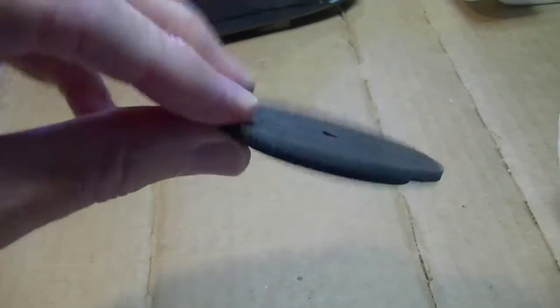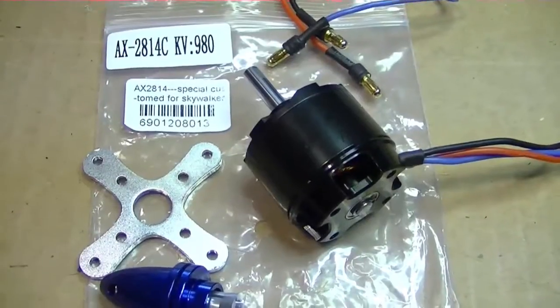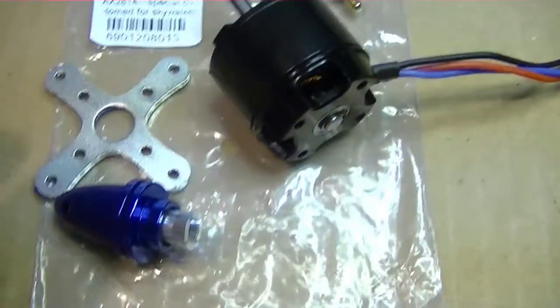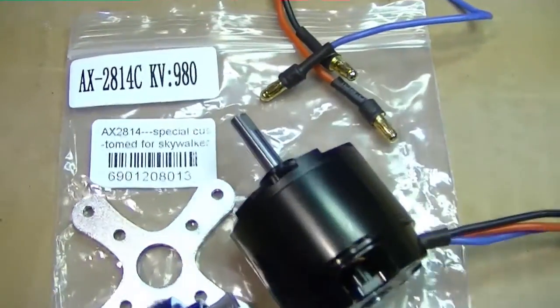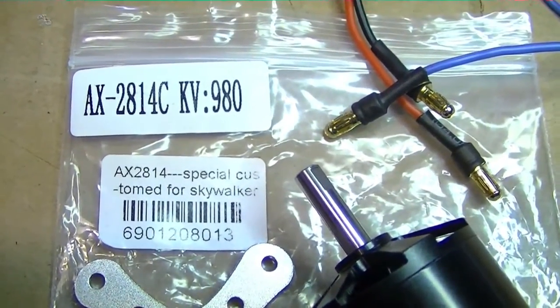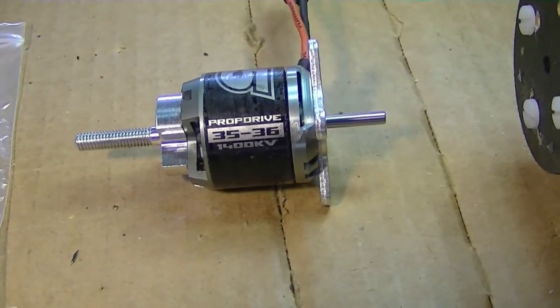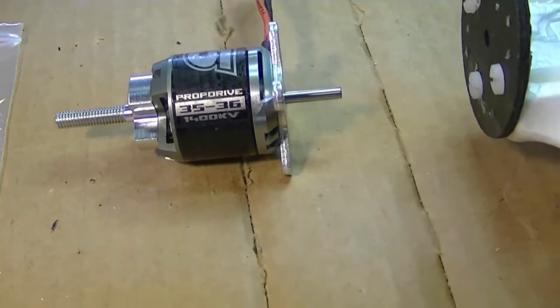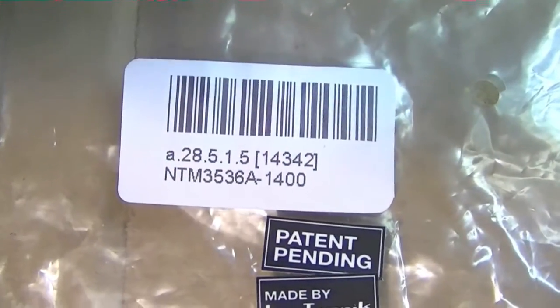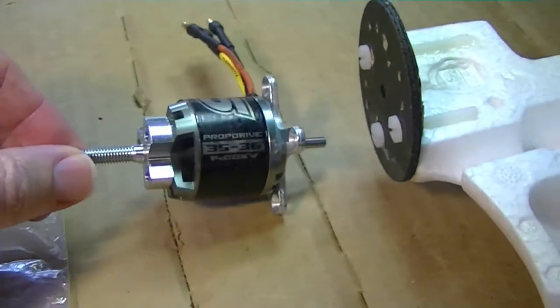So after the glue dried I went ahead and sprayed the motor mount black, just to give it a nice look. The motor we're going to be using is a custom special from BevRC, and it comes with a motor mount and a spinner. It is the AX2814C and it's got a KV of 980. Now I may also use the HobbyKing ProDrive 3536, which is a 1400 KV. This is the part number for it right here. It has a little more power and also weighs a little more too.